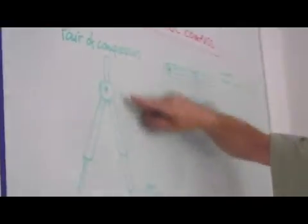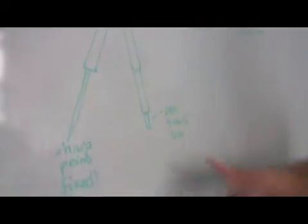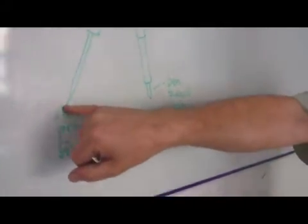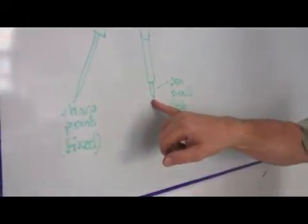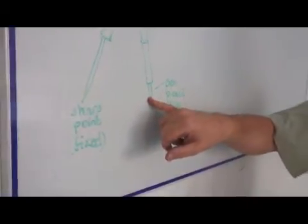The pair of compasses, the old type has a fixed top with two legs, and the angle between the legs can be changed, and we can change the distance between the sharp point here and the pen or pencil here. This is the most conventional type.